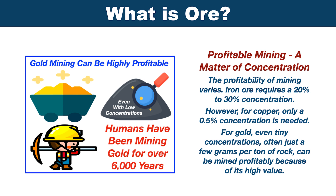The profitability of mining varies. Iron ore requires a 20 to 30 percent concentration. However, for copper, only a 0.5 percent concentration is needed.